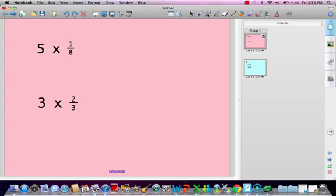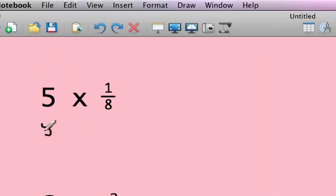Alrighty, we're multiplying whole numbers with fractions. Just remember with whole numbers, this says 5 right here, but you can write 5 over 1. And that's still the same number because anything over 1 is that number.